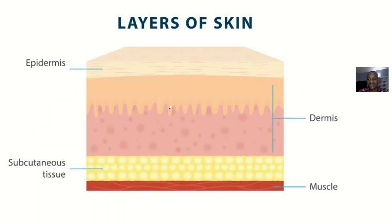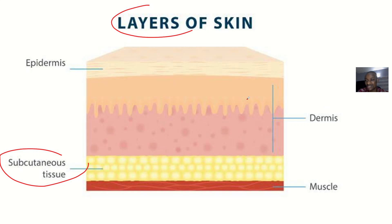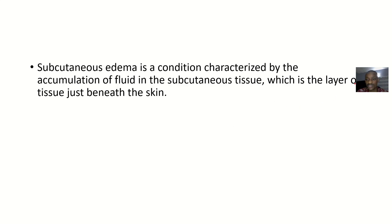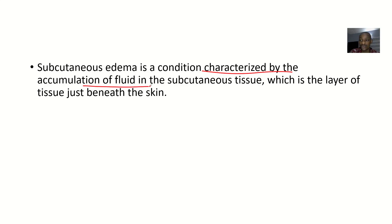Looking at this picture, you can see the layers of the skin. The subcutaneous layer is just beneath the skin. The skin itself is made up of the epidermis and dermis. So subcutaneous edema means there is accumulation of fluid just beneath the skin — it is a condition characterized by accumulation of fluid in the subcutaneous tissue, which is the layer of tissue just beneath the skin.